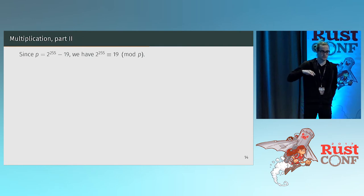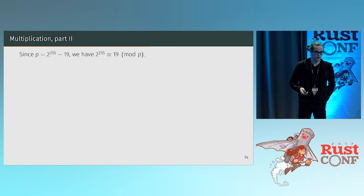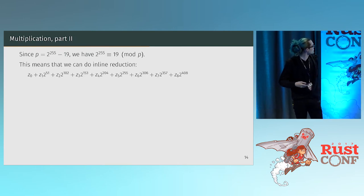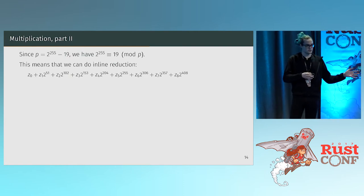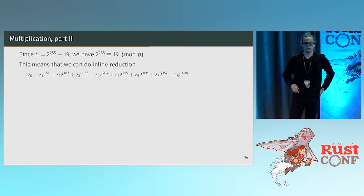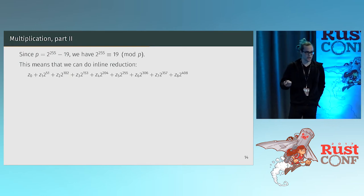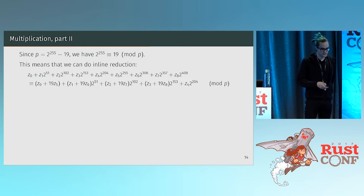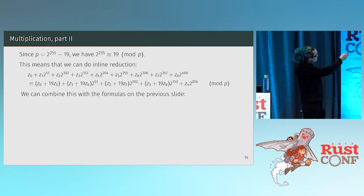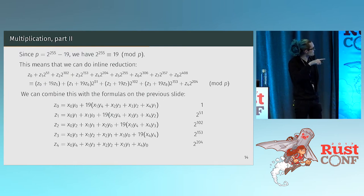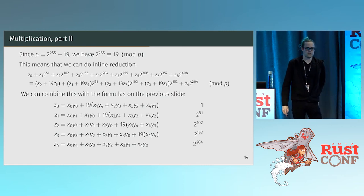We're working mod p, so we need to reduce back to the original size of the inputs. Notice that p = 2^255 − 19 has a special form: since p ≡ 0, we get 2^255 ≡ 19 mod p. This is useful because in the product we've just computed, the Z5 term has a factor of 2^255 which can be replaced by 19. Similarly, the Z306 term can be written as 2^255 × 19, simplifying into a nice form. This gives a pretty fast inline reduction.